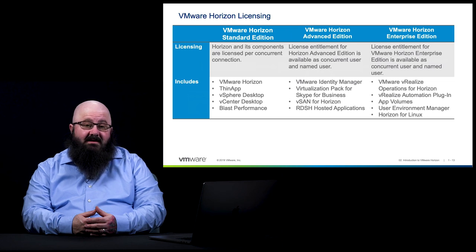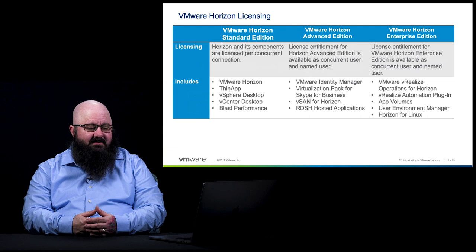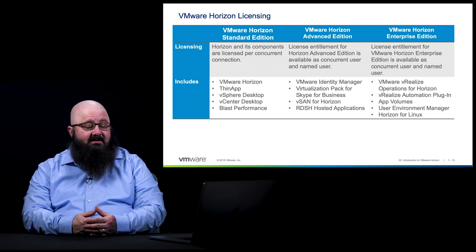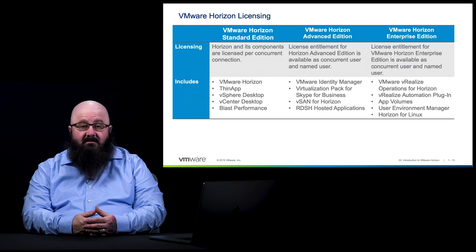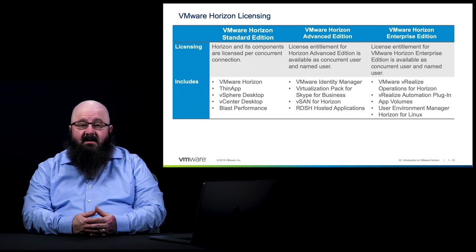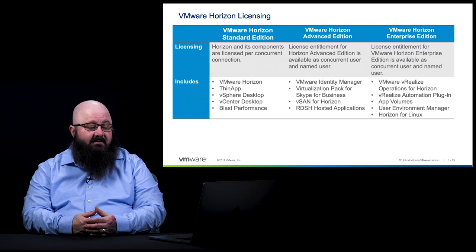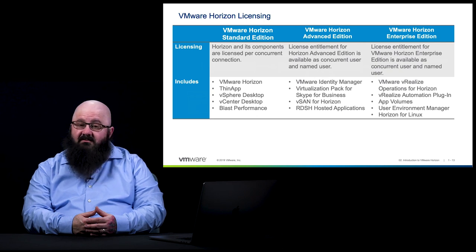Last but not least is the Enterprise Edition. This edition includes everything — in addition to what we see in the Advanced and Standard licenses, we also get vRealize Operations Manager for Horizon, the vRealize Automation plugin, which lets us leverage vRealize Automation and vRealize Orchestrator, App Volumes, User Environment Manager, and Horizon for Linux.